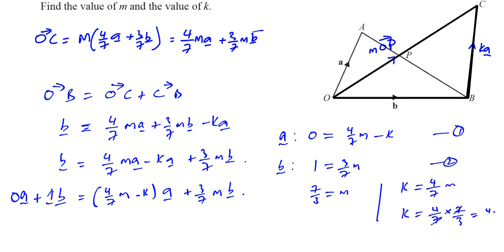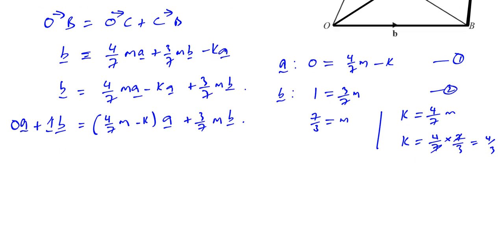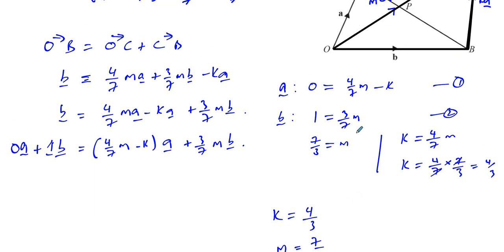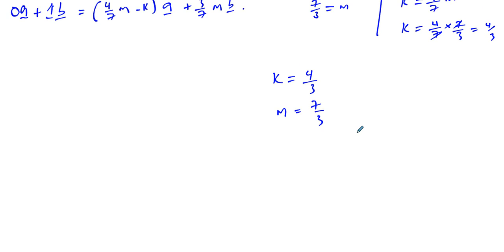So here we have our answers. We have k is equal to 4 over 3 and m is equal to 7 over 3. That's how we can answer these questions. Is that clear?